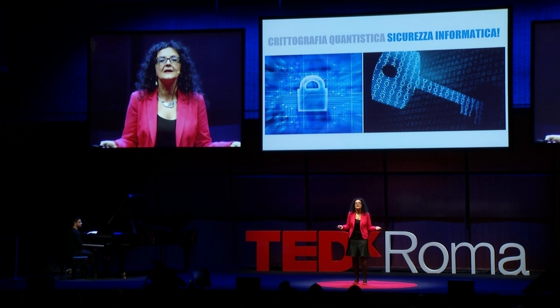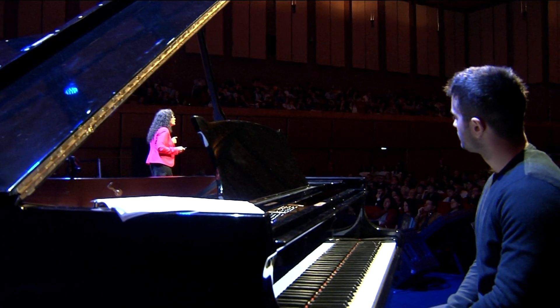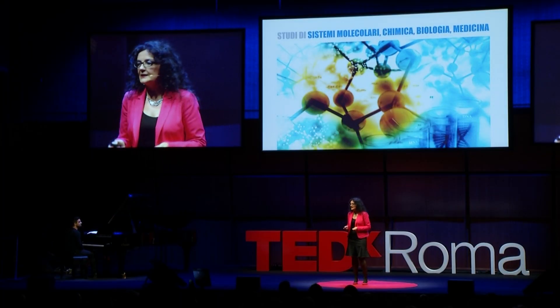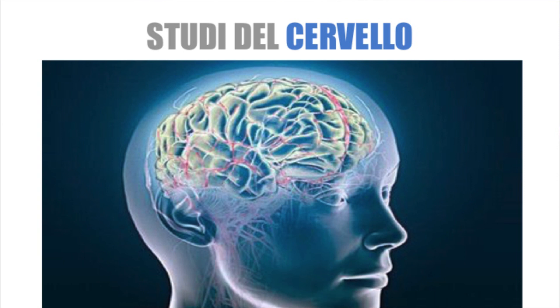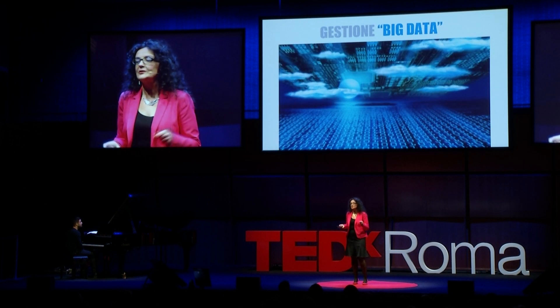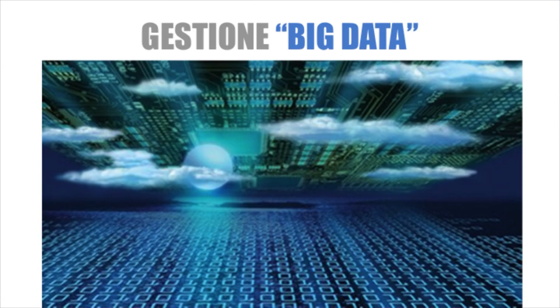In twenty years, we imagine this computer will give us quantum cryptography and information security. Hackers and information thieves will have a very difficult time, since as soon as they try to intercept data they will destroy the quantum coherence. Quantum computers will be useful for studying chemistry, molecular systems, biology, medicine, and even for studying the brain — that wonderful structure made of billions and billions of neurons. Last but not least, in a globalized world they will help us work with big data, analyzing it much more quickly.